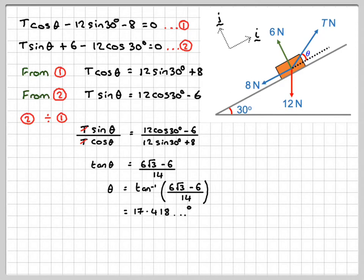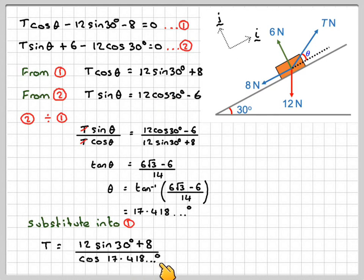In order to find T, we need to substitute either into 1 or 2. So substituting into 1, and I'm going to use this one here. I'm going to say that T is going to be 12 sine 30 plus 8 over cos of 17.418. Now be careful here not to round this off down here. So just use the answer function on your calculator. Use the fraction button as well, and that will give you 14.67 newtons.